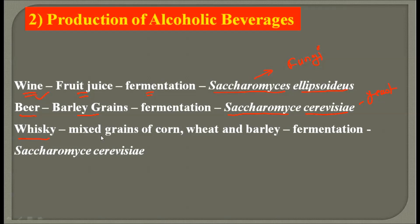Third we have whiskey, which is produced from a mixed grain of corn, wheat, and barley, and the fermentation is done by Saccharomyces cerevisiae — again the yeast. So wines, beers and whiskies are all produced by Saccharomyces species through the process of fermentation. There is a great application of these fungi in the production of alcoholic beverages.